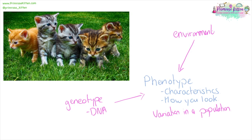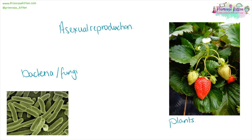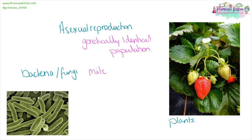Things that lead to variation in a population include influences like diet, exercise, and personal choice. Asexual reproduction is very common in the plant world — strawberry plants, spider plants — and in bacteria and fungi. You are going to get a genetically identical population, as these organisms are dividing by mitosis, so all of the daughter cells are going to be the same.